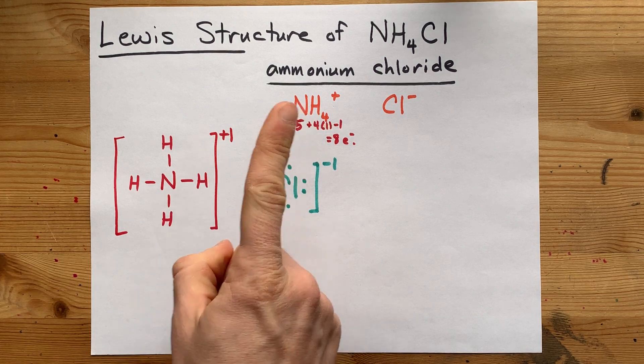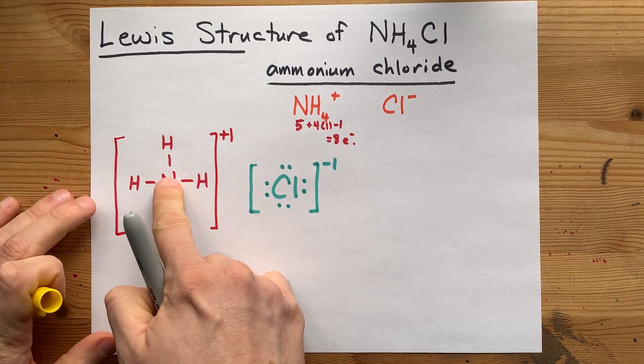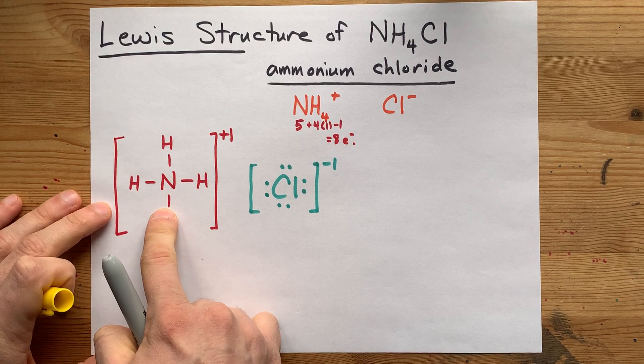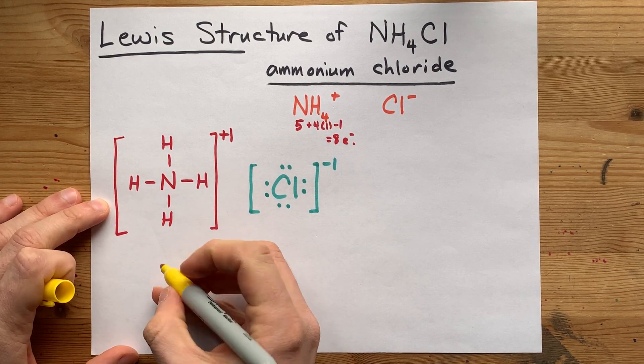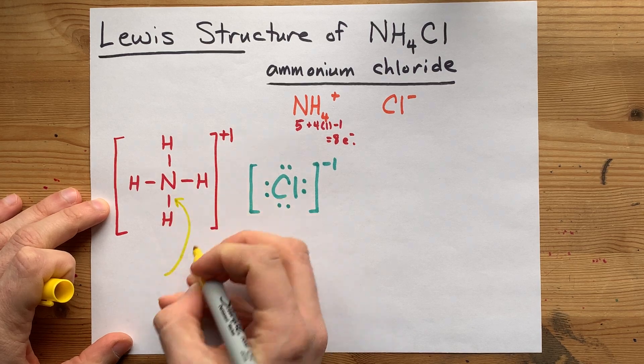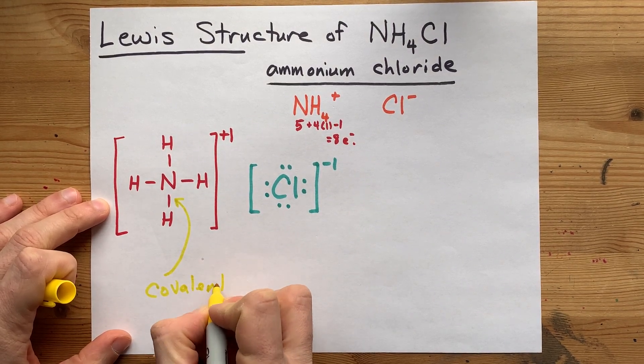Now I want to point one more thing out. The bonds between the nitrogens and the hydrogens here are shared pairs of electrons between two nonmetals. Those bonds are covalent bonds.